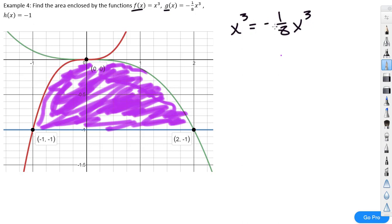When does x³ equal -1/8 x³? Well we could add 1/8 x³ to the side. What we get is 9/8 x³ = 0. Well that's only going to equal zero when x equals zero. We know that they intersect at (0, 0).